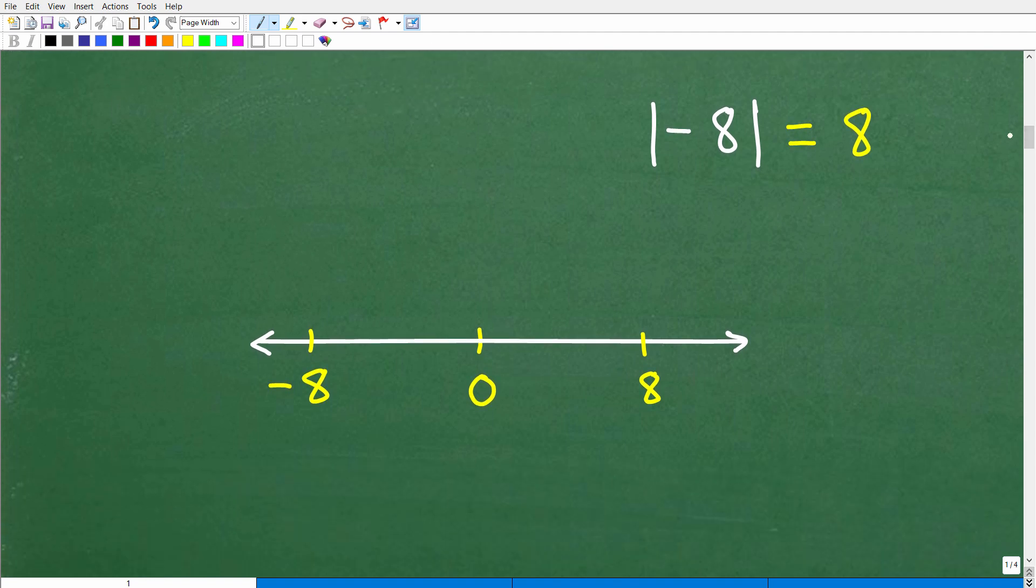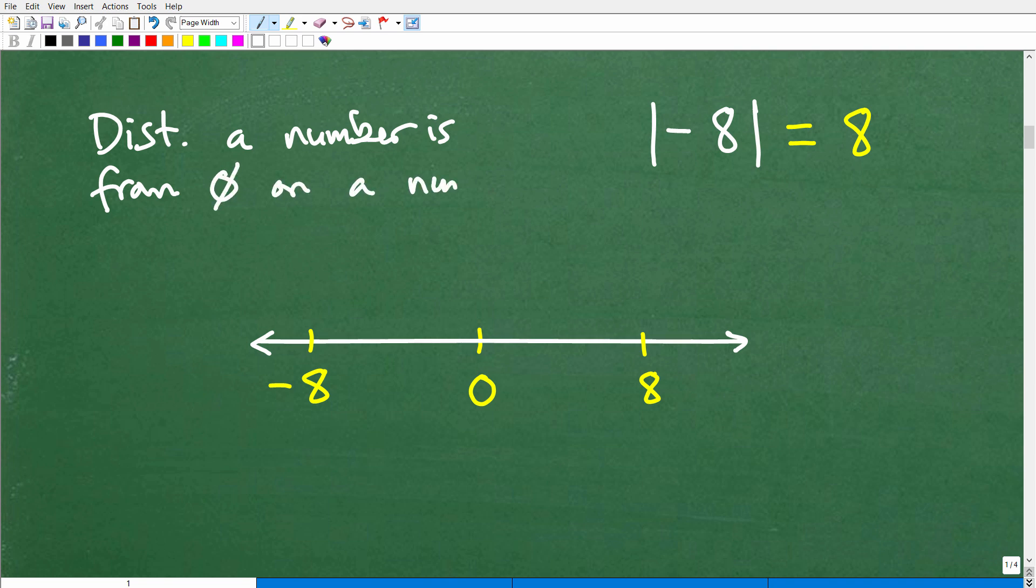Okay, so the definition of absolute value is the distance, I'll write this right here, it's the distance a number is from 0 on a number line. So we'll just write this like this. But let's go ahead and graphically see this.